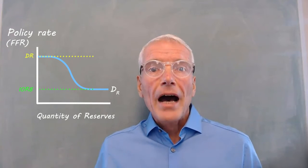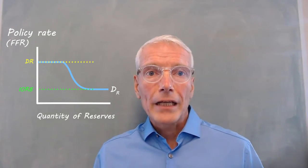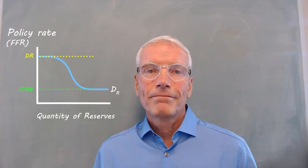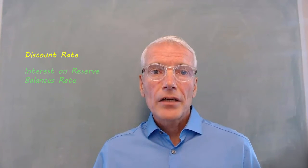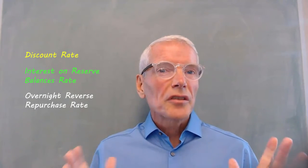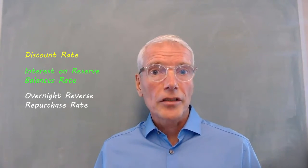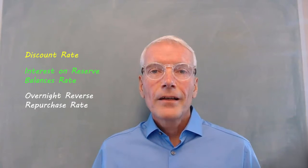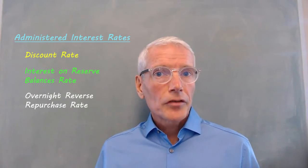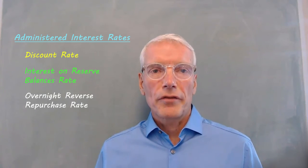And as already explained, the high end of the demand curve is the discount rate. So the central bank can shift the high end of the demand curve by changing the discount rate, which serves as a ceiling on the demand curve. The discount rate and the interest on reserve balances rate, along with the overnight reserve repurchase rate — which serves like the interest on reserve balances rate but is available to a broader scope of financial institutions that invest in the Federal Reserve — are collectively called administered interest rates. In times of ample reserves, they are used to guide the policy rate into the central bank's target range.